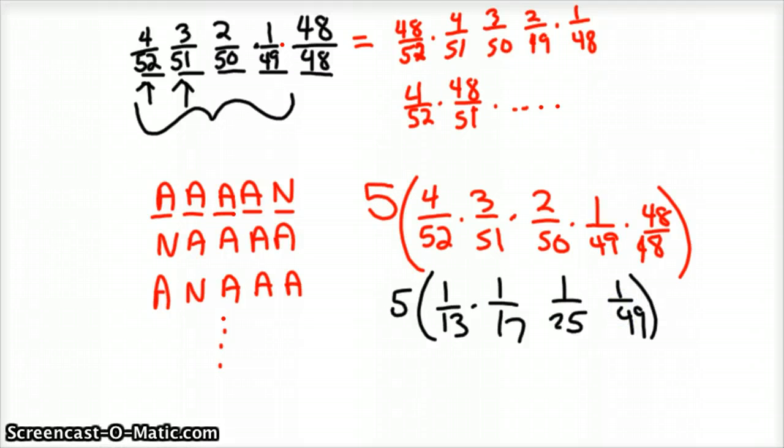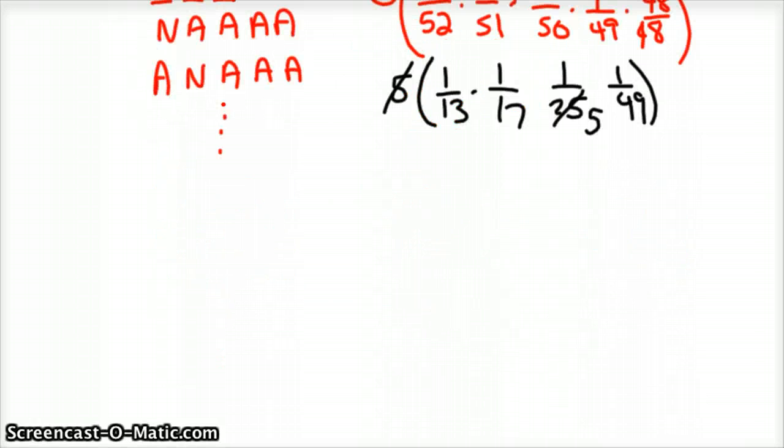We don't need the 48 divided by 48 because it's one. And then five and 25 reduces to five and one.